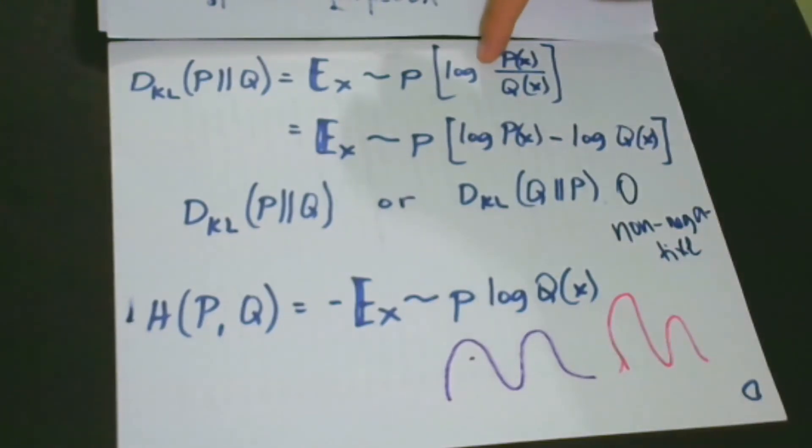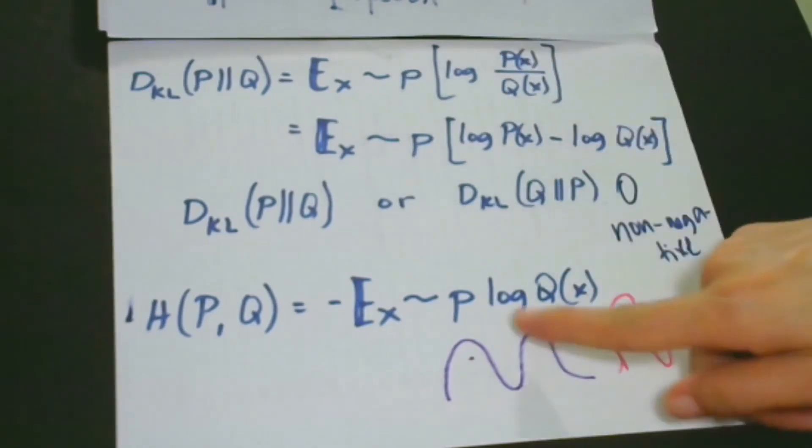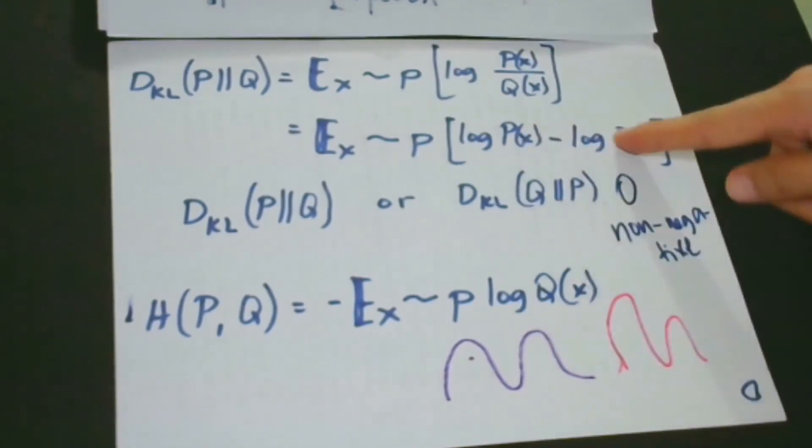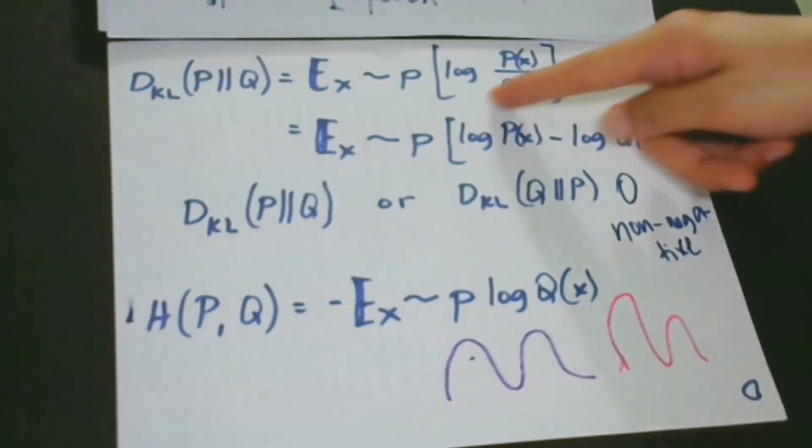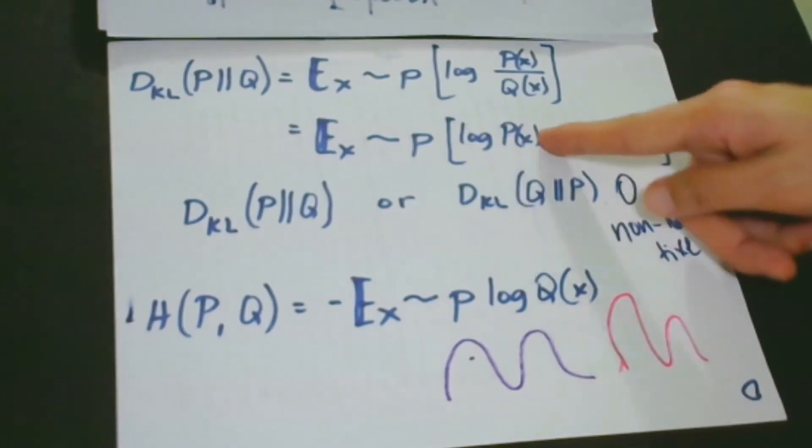So here, we could, we have P(X). But in this case, we don't have, right? So we have P log Q(X). And then we omit the P(X). So why do we do this? Why do we omit the P(X)? What is this?